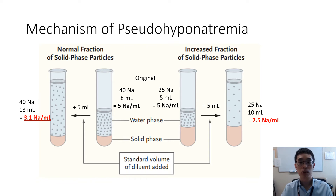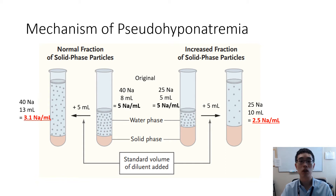If there is an increase in protein or lipid in the serum, this results in a higher proportion of the solid phase to the water phase, as seen on the right. The laboratory again dilutes this into a fixed volume and since there is less sodium molecules, dilution into the fixed volume will result in a lower concentration of sodium as demonstrated here. Please feel free to pause the video and count the number of individual sodium molecules to convince yourself why a lower sodium concentration will result on the right side but not the left side after the fixed dilution.